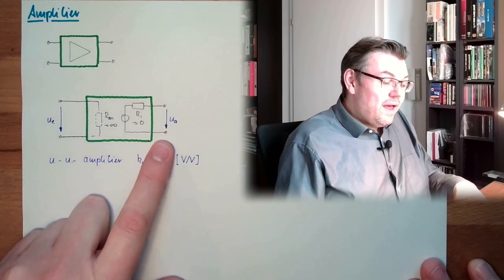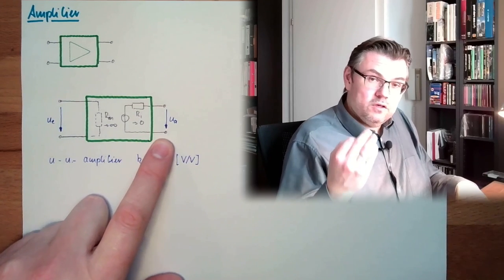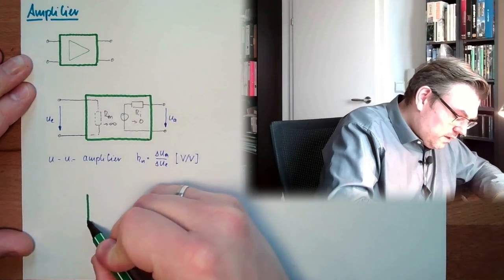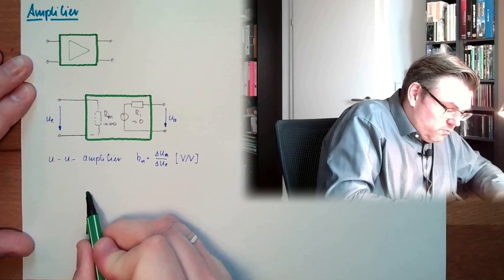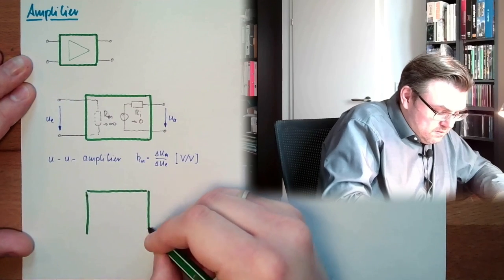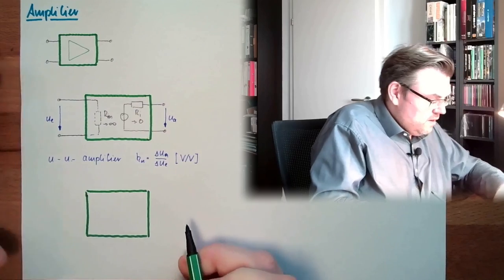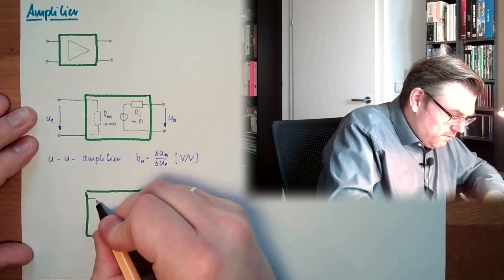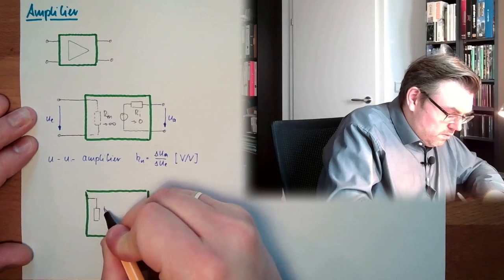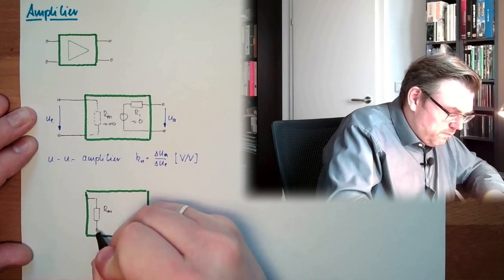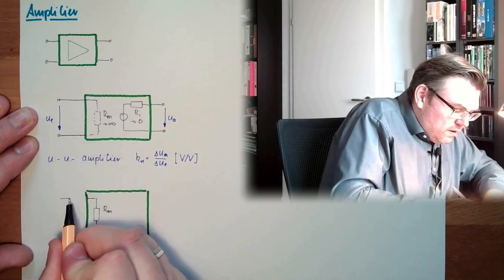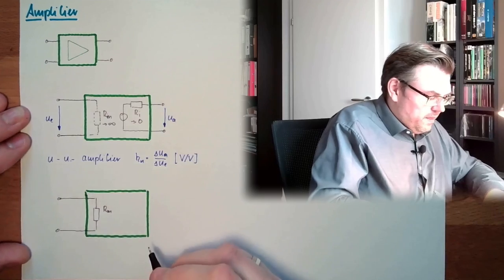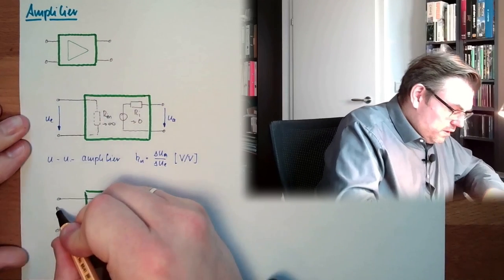However, if I don't need a voltage output here, if I don't need this, I can use, I can control the same square, the same input, totally the same input. Here we have our measurement voltage, measurement input. This shall also be a voltage, Ue.